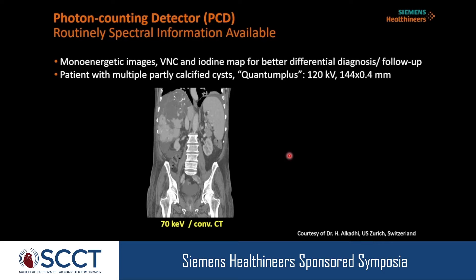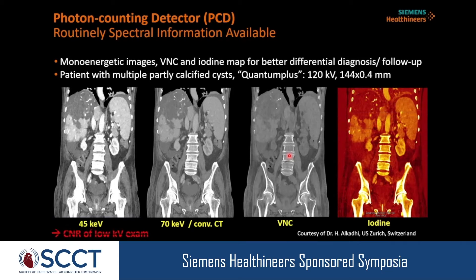Here's what can be done with the data: a patient with a partly calcified lesion acquired at 120 kV. We see a 70 keV image representing a conventional CT. You can calculate a virtual non-contrast image with iodine removed algorithmically, calculate a pure iodine distribution image in quantitative fashion, and calculate mono-energetic images — which are the standard output of a photon counting system. Going to a low value of 45 keV demonstrates substantially increased iodine CNR, making low kV scanning obsolete since you can achieve this virtually from 120 kV data.